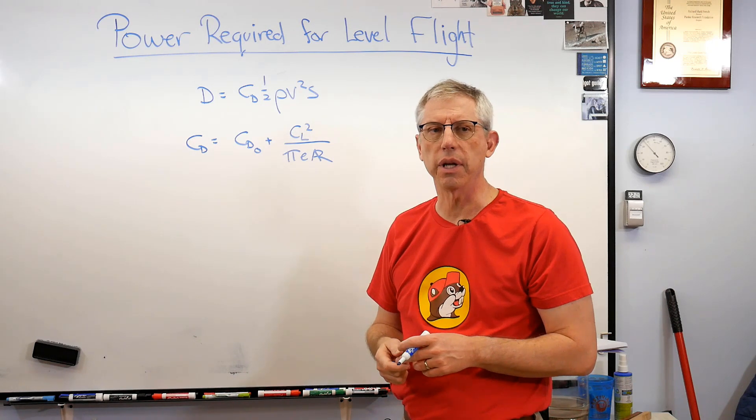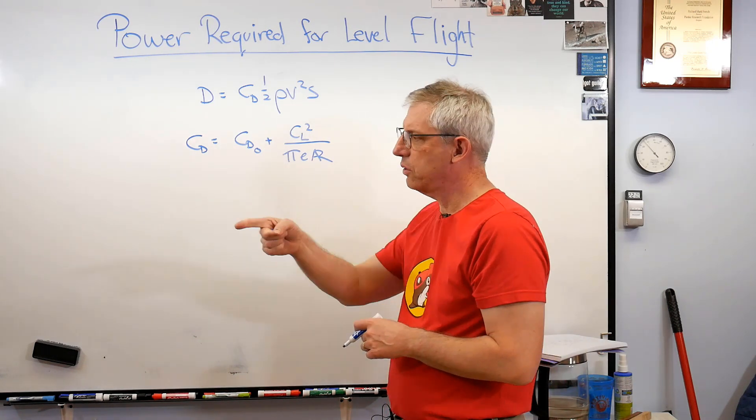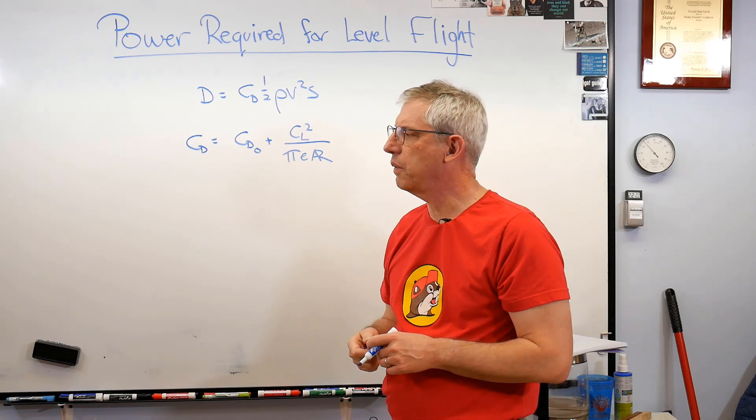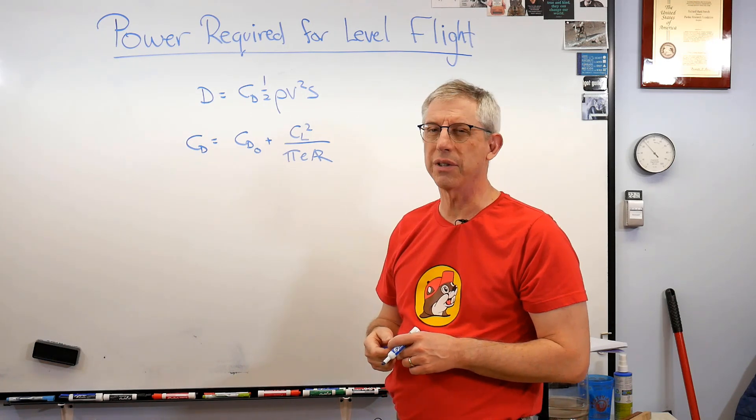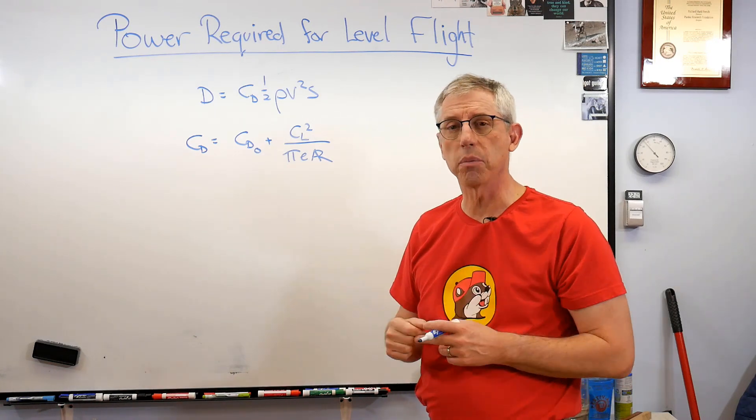Well pi is just a number, E is a number that measures basically the efficiency of the wing, it's called the Oswald efficiency factor or spanwise efficiency. So for the wing on my little airplane over there that's not really tapered very much at all, E is probably in the neighborhood of 0.8 or 0.9.